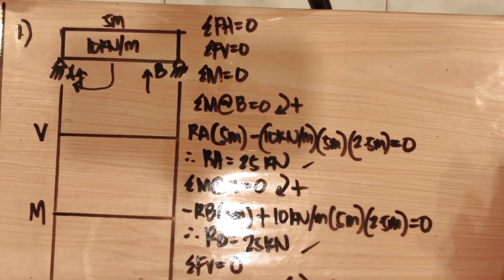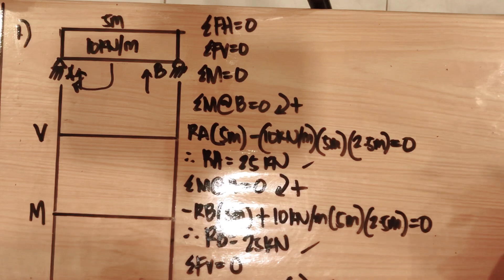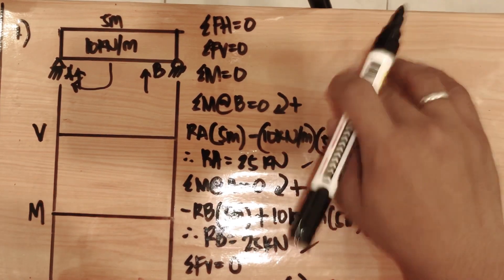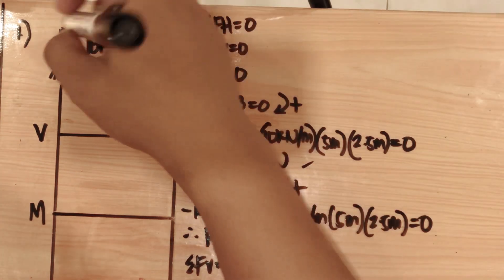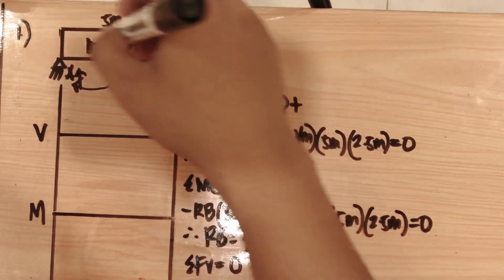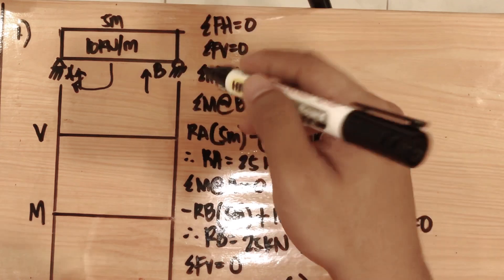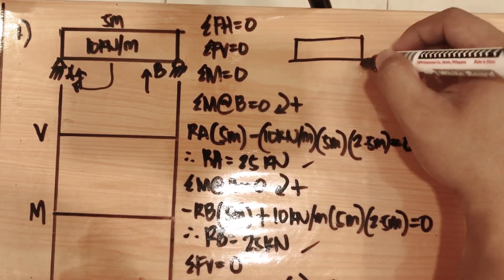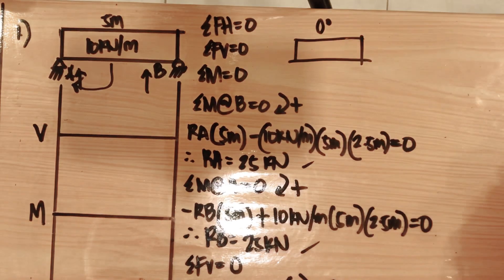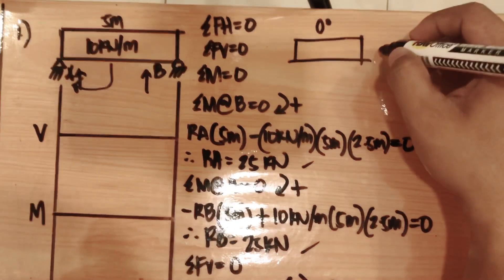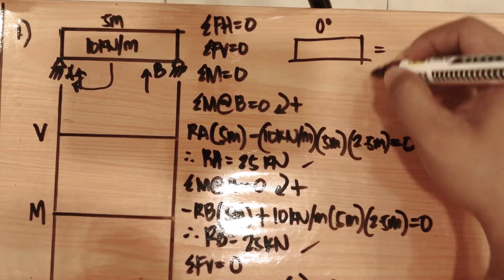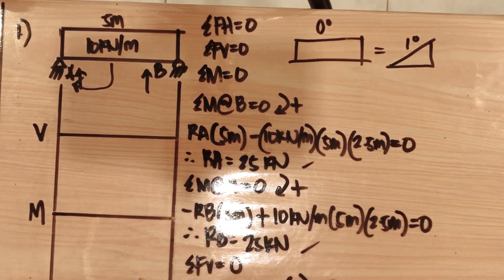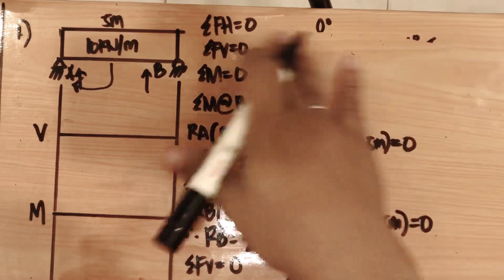Now we start drawing the shear and moment diagram. First, we determine the degree of the shape. Based on strength of materials, a rectangle is zero degree. Adding one degree gives us a triangle as the first degree shape.